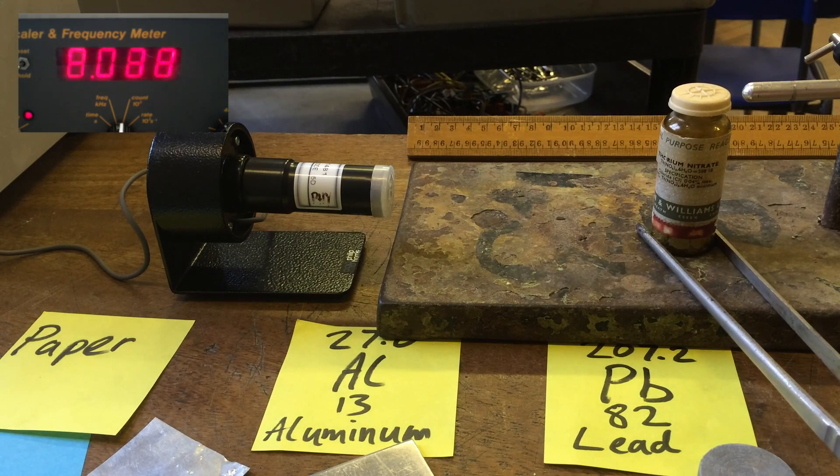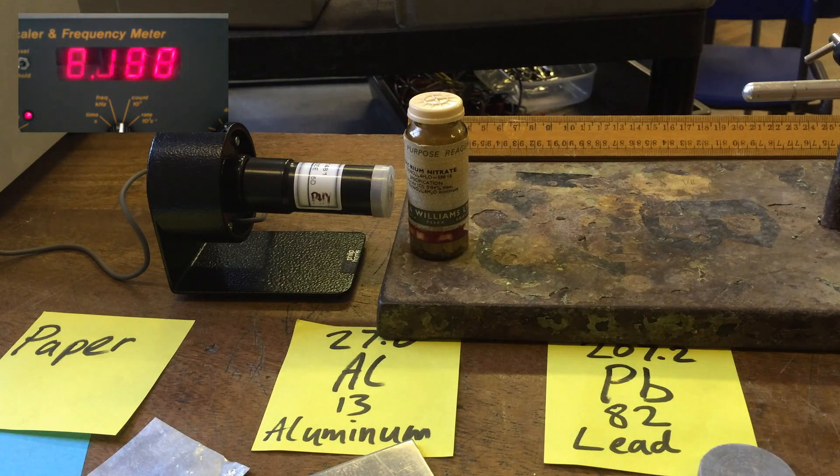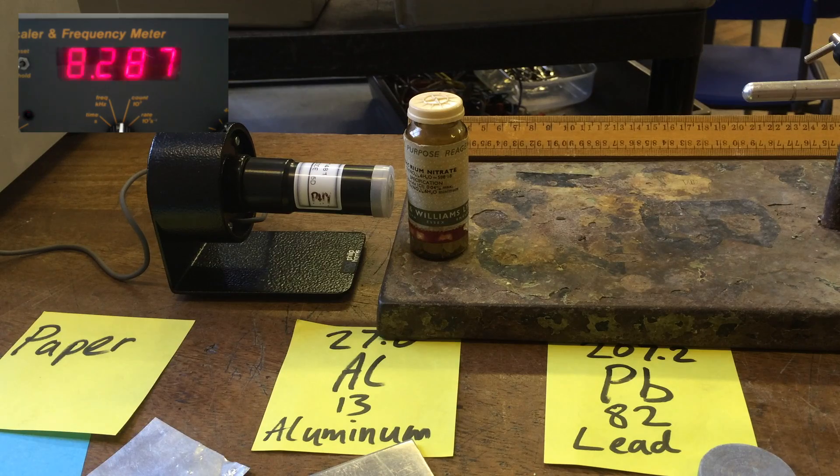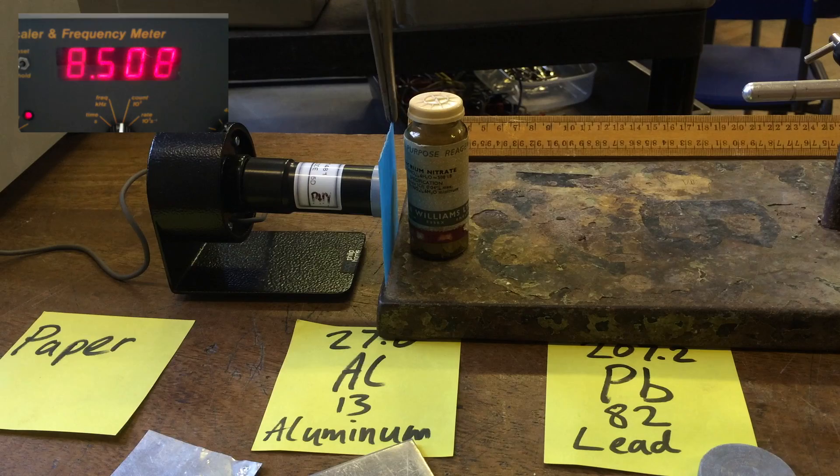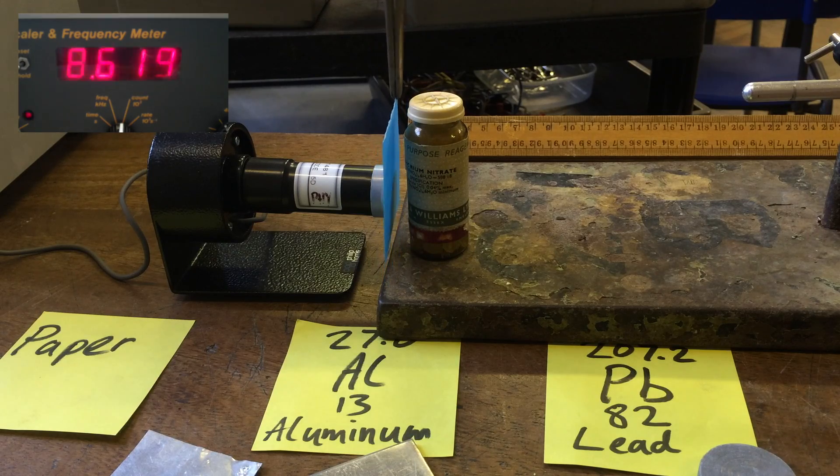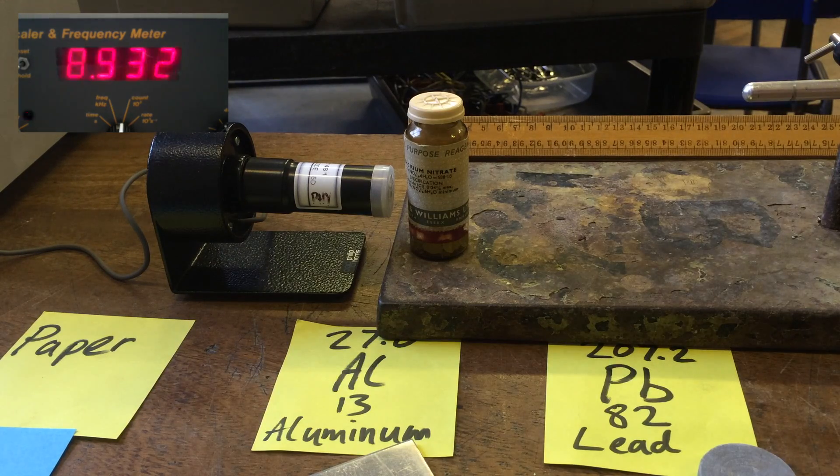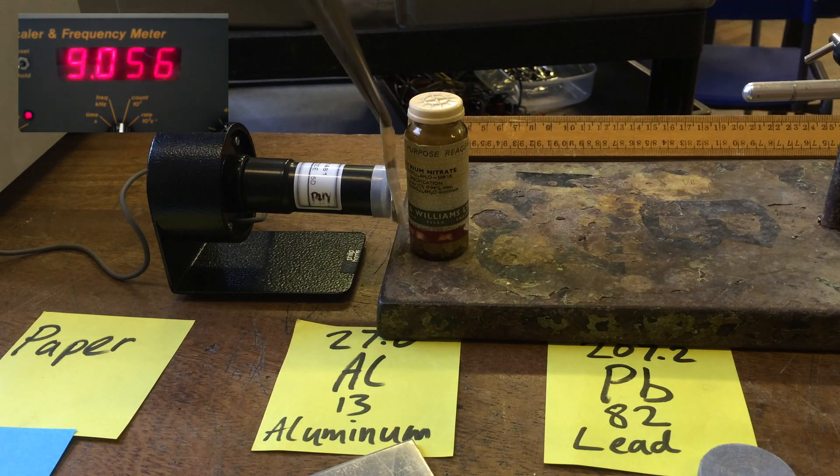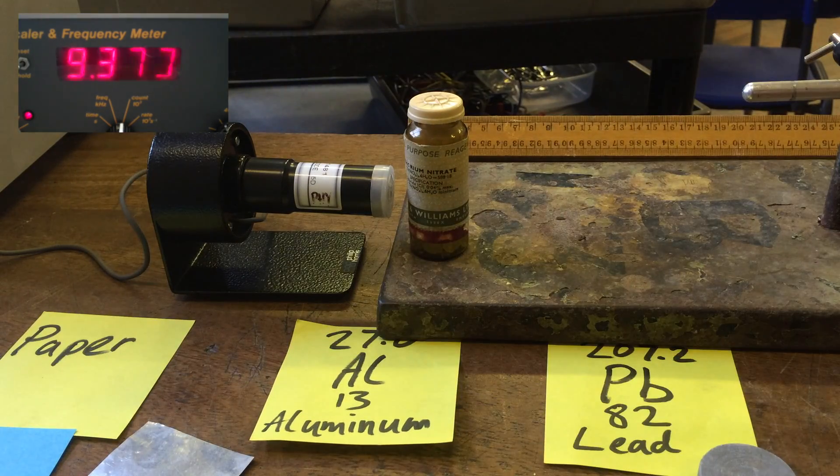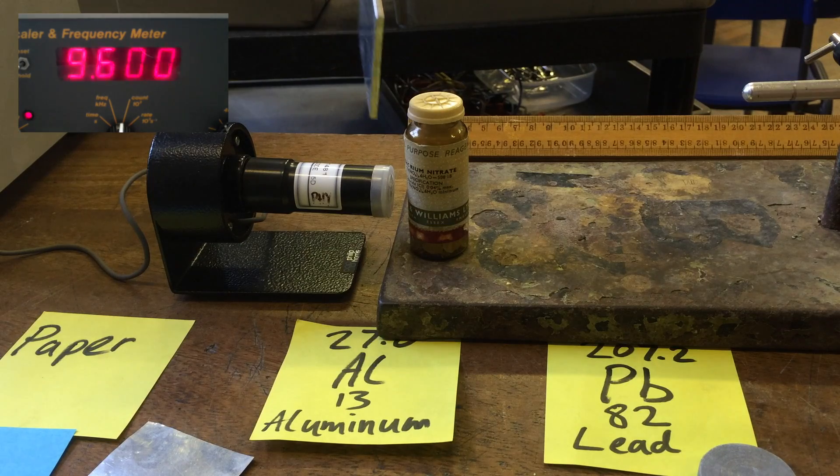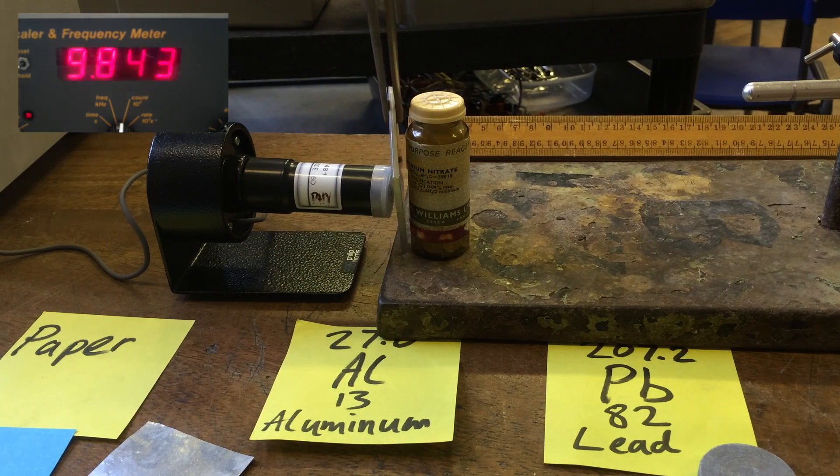Let's test its penetration because the gamma rays are the most penetrating. You should find the paper has very little effect on reducing the count. Aluminum has very little effect on reducing the count. Let's try the thicker aluminum. Still hasn't reduced the count.